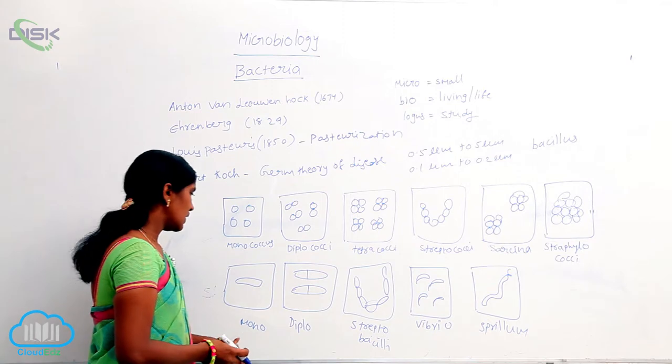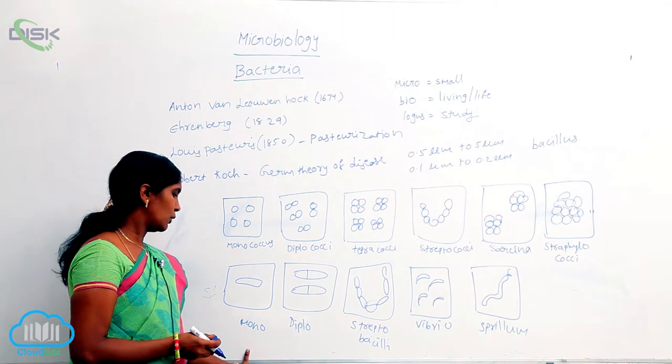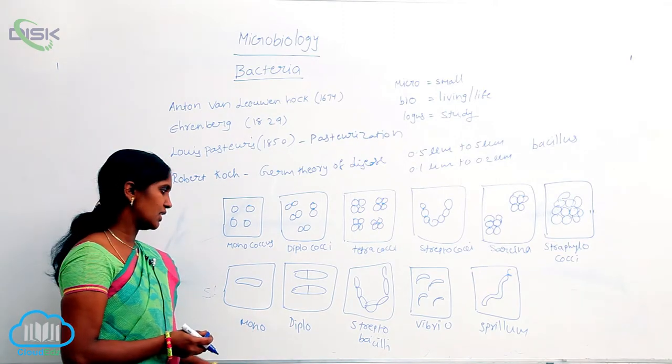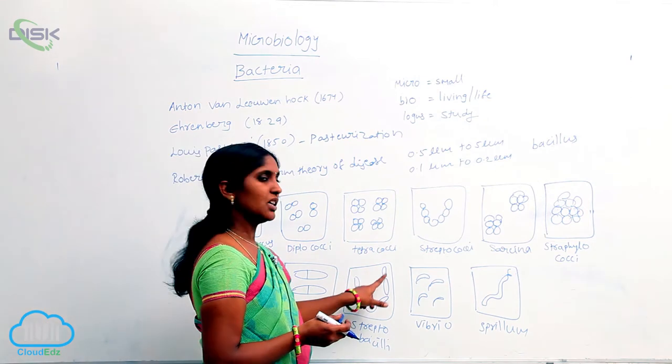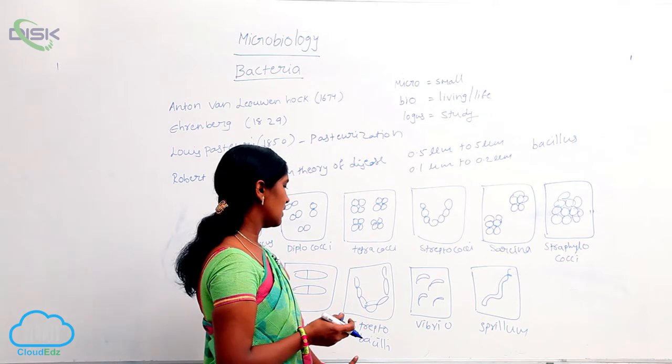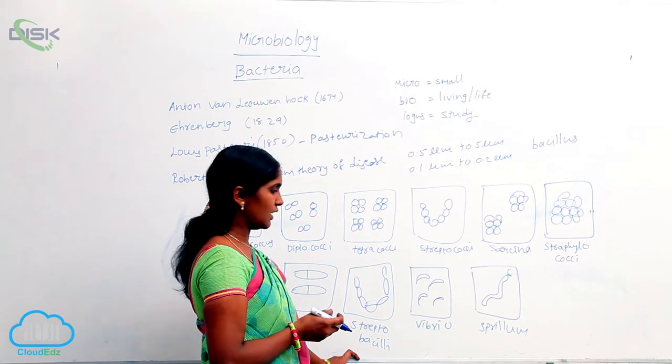If there is one rod cell, it is called monobacillus. If there are two rod cells, it is diplobacilli. If they are arranged in a chain manner, they are called streptobacilli.